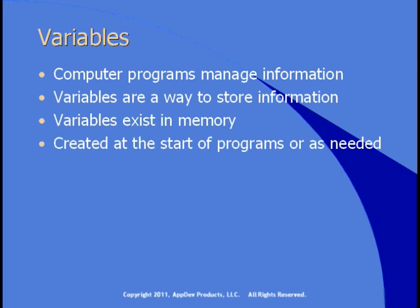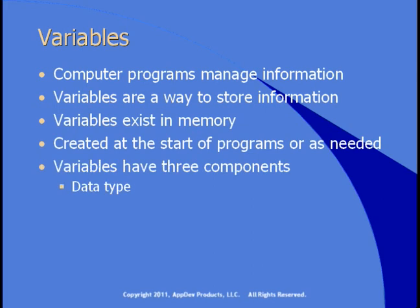You can create variables at the start of your programs or as needed later on. Variables have three components: the data type, which is the type of information you're storing — is it a number, a string, a date? Variables need a name so that you and the compiler can distinguish one from another. And then variables have a value, which is the information stored in the variable.